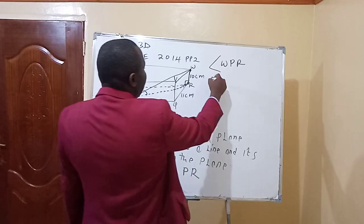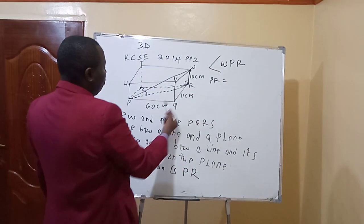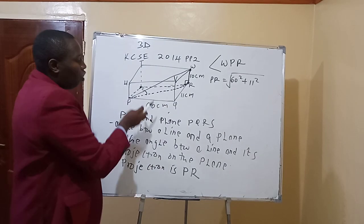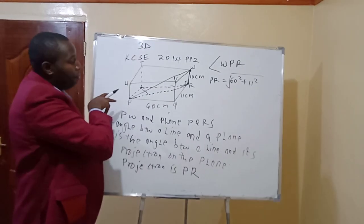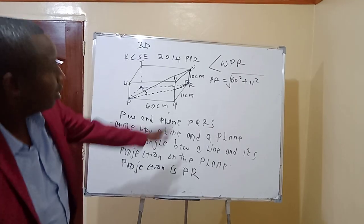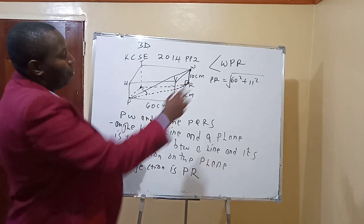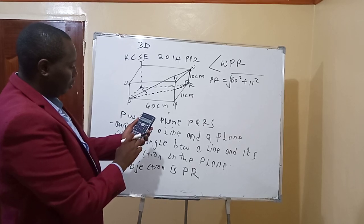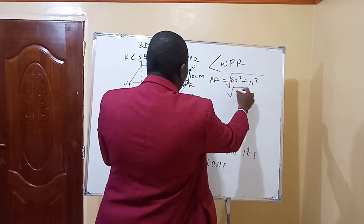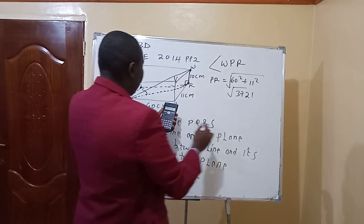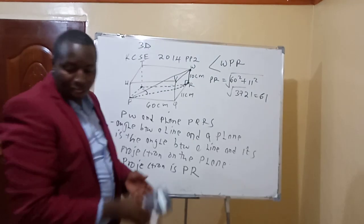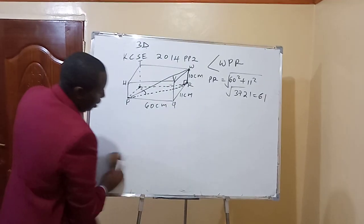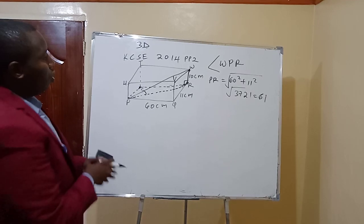Find PR. PR is the diagonal of the base, and the base is rectangular, so PR equals the square root of 60 squared plus 11 squared. That gives the square root of 3721, which equals 61. So PR = 61 centimetres.